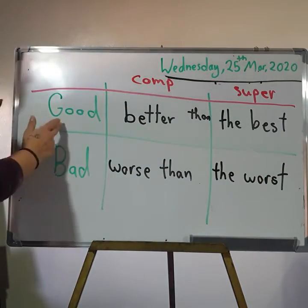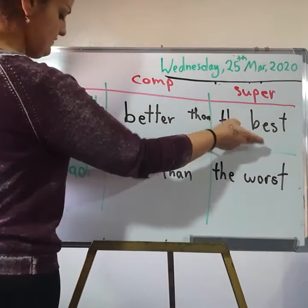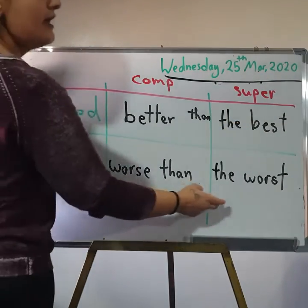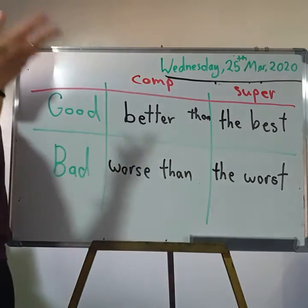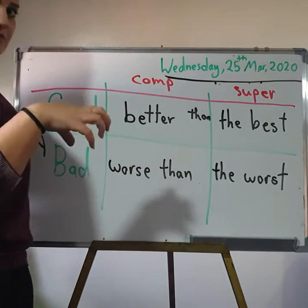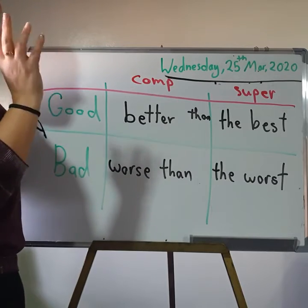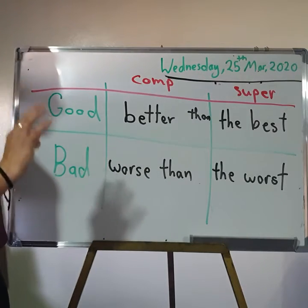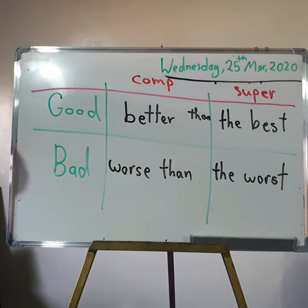So I have: good, better than, and the best. Bad, worse than, and the worst. So I have to memorize them and put them in my mind as they are, because they don't have a rule. I call them irregular adjectives, okay?